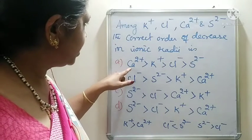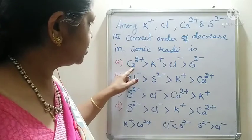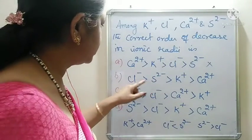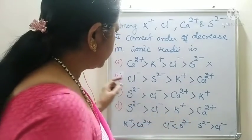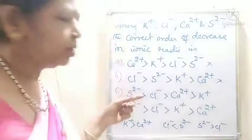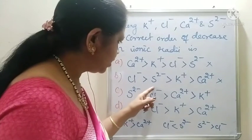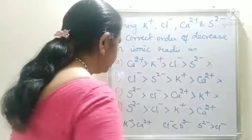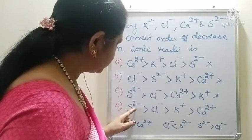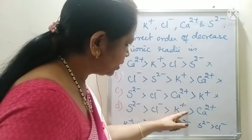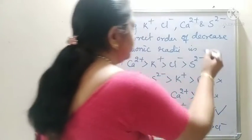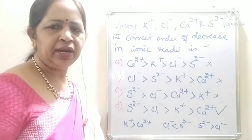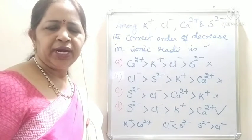Ca²⁺ is not greater than K⁺, so that option is wrong. Cl⁻ is not greater than S²⁻, so that option is also not correct. S²⁻ greater than Cl⁻ is correct, but Ca²⁺ greater than K⁺ is not correct, so that option is also wrong. In option D: S²⁻ > Cl⁻ > K⁺ > Ca²⁺. This is the correct answer. We have to compare ionic radii of positive and negative ions separately and then combine them — that makes it easy to get the answer.